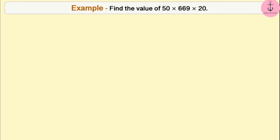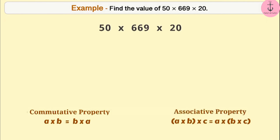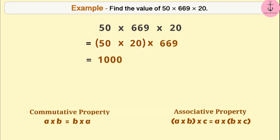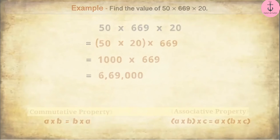Next example: find the value of 50 × 669 × 20. It might be difficult to solve directly. However, by using the commutative property and associative property, it can be solved easily. Using the commutative property of multiplication, the numbers can be reordered. Then, using the associative property, they can be grouped so that the product of 50 and 20 gives 1000, and 1000 × 669 gives 669,000.